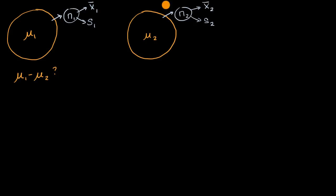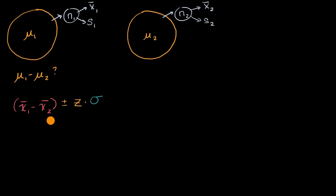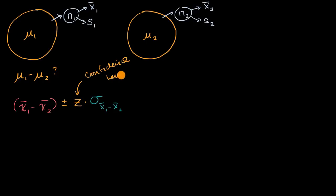You might say the confidence interval would be the difference of the sample means — x bar sub one minus x bar sub two — plus or minus some Z value times the standard deviation of the sampling distribution of the difference of the sample means, x bar sub one minus x bar sub two. The confidence level would determine that Z value; if the confidence level is 95%, that would determine our Z.